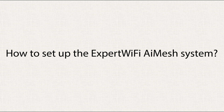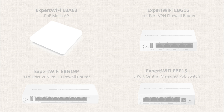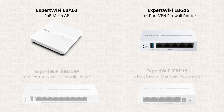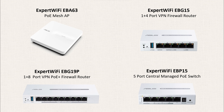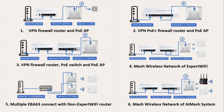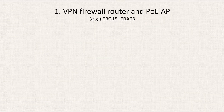How to set up the Expert Wi-Fi AI Mesh system. In this video, we will demonstrate the different configurations of the Expert Wi-Fi series for setting up the Expert Wi-Fi AI Mesh system, using products such as EBA63, EBG15, EBG19P, and EBP15 as examples. In total, we will showcase six different product configurations. You can choose the combination that suits your needs and jump directly to that section. Number one: the configuration of VPN Firewall Router and PoE AP.